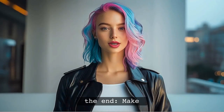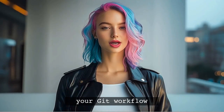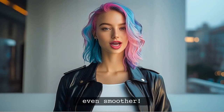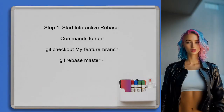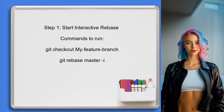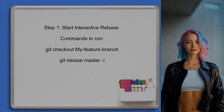At the end of this video, I'll share a quick tip that will make your Git workflow even smoother. To begin squashing commits in Git, the user should first initiate an interactive rebase by checking out the feature branch and starting the rebase process.